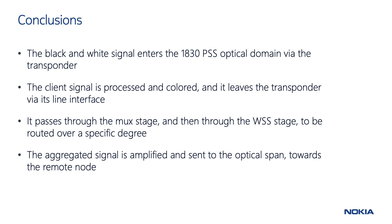Let's now summarize what we have seen in this video. 1. The black and white signal enters the 1830 PSS optical domain via the transponder through one or more client interfaces. 2. The client signal is then processed and colored, and it leaves the transponder via its line interface. 3. The signal passes through the MUX stage, where it's coupled with other transponders' line signals with different wavelengths, and then through the WSS stage to be routed over a specific degree depending on the software configuration. 4. The aggregated signal is amplified and sent to the optical span toward the remote node.